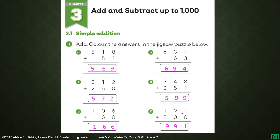If you're finished, we will go to number two. Remember, you need to color the answer in the jigsaw puzzle — any color that you like. Look at the answers: 569, 694, 572, 599, 166, and 991. Please find 569, 694, 572, 599, 166, and 991.